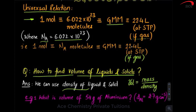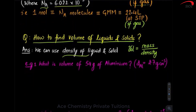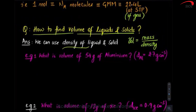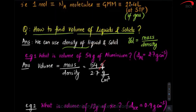What is the volume of 54 grams of aluminium? We use the standard formula: volume = mass ÷ density. Mass is 54 grams, density is 2.7 grams per centimetre cube. The gram units cancel, so the final answer is in centimetre cube. If you cancel, the answer is 20 centimetre cube.